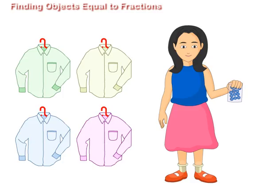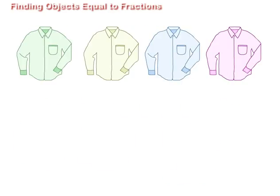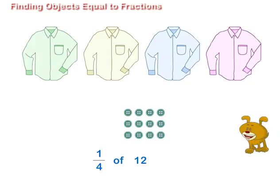Suppose Rashmi wants to put twelve buttons equally on four shirts. So, to find one-fourth of twelve buttons, she will divide twelve by four which is equal to three.